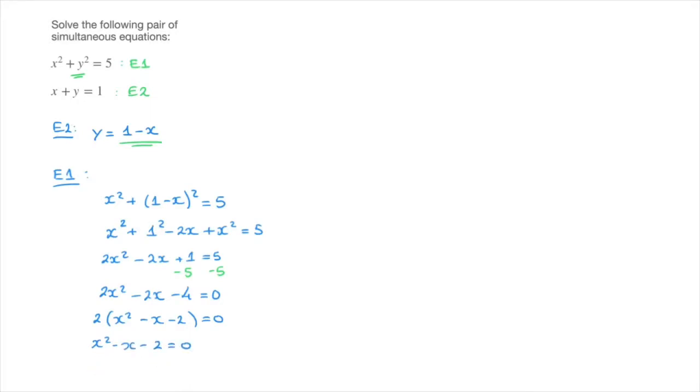Now, to factor this quadratic, I am looking for two numbers we'll call p and q, which add up to negative 1, that's the number multiplying the x we have here, and whose product is negative 2. And it doesn't take us too long to see that if we let p equal negative 2 and q equal 1, then that works perfectly. Indeed, negative 2 plus 1 equals negative 1, and negative 2 times 1 equals negative 2.